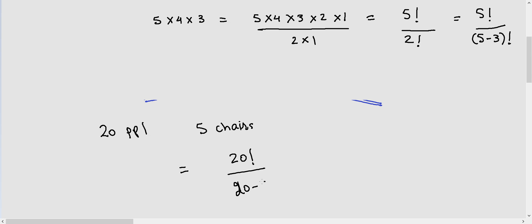20 - 5 factorial, or that's equal to 20! divided by 15!. That's equal to 20 × 19 × 18 × 17 × 16.